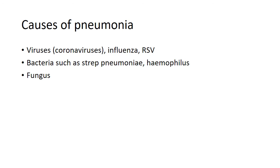Pneumonia is an infection in the lungs and respiratory tract with a number of causes. There are viral causes, which are very common — including coronaviruses, influenza viruses, and RSV. Pneumonia can also be caused by bacteria such as streptococcal and haemophilus infections, and it can also be caused by fungus.